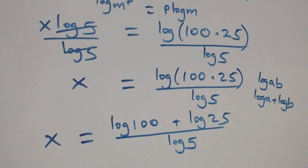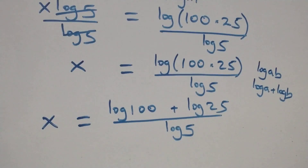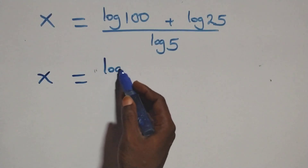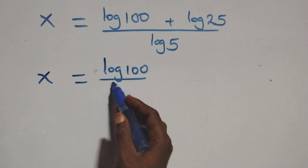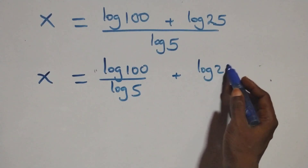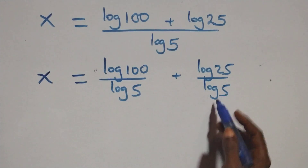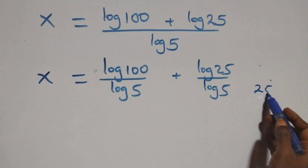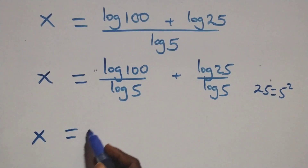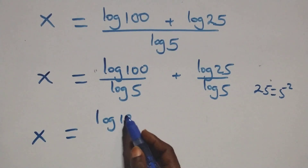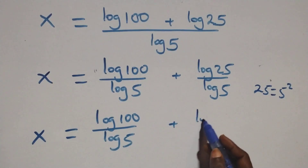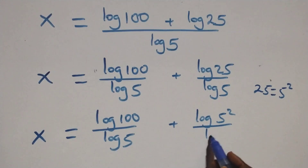Next, we separate this into two fractions and we have x equals log 100 over log 5 plus log 25 over log 5. Note that 25 can be written as 5 times 5, that's 5 squared. So all we have becomes x equals log 100 over log 5 plus log 5 squared over log 5.